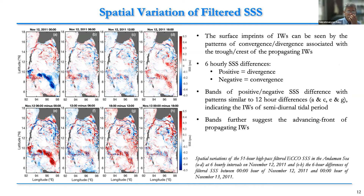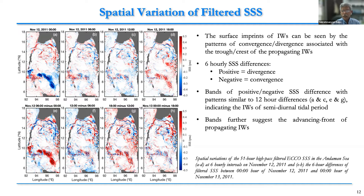We can see the spatial variation of filtered SSS. We plotted every six-hourly data after filtering. The positive values represent divergence and negative values represent convergence. This helps us to understand the propagation of the internal waves. You see bands of positive and negative sea surface salinity differences with patterns similar to surface salinity differences, and you can see the propagation signal of these internal waves.